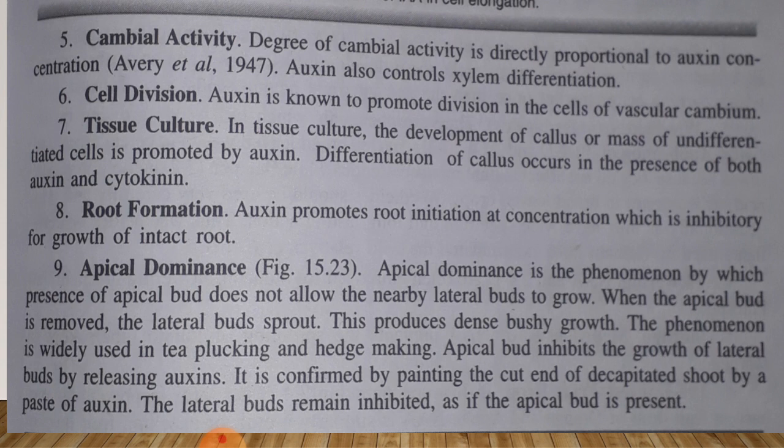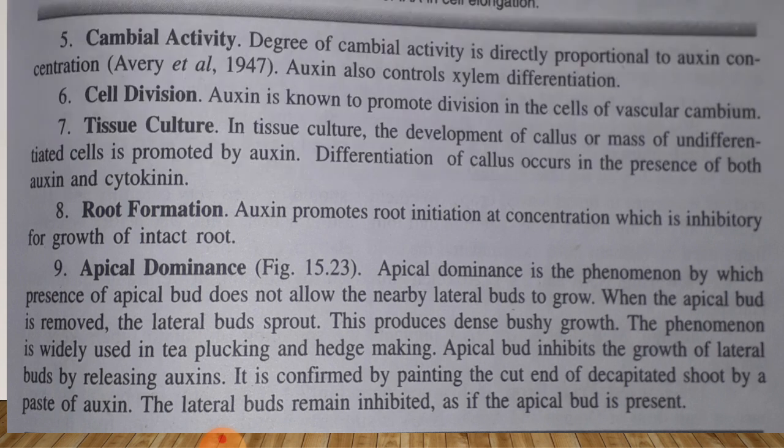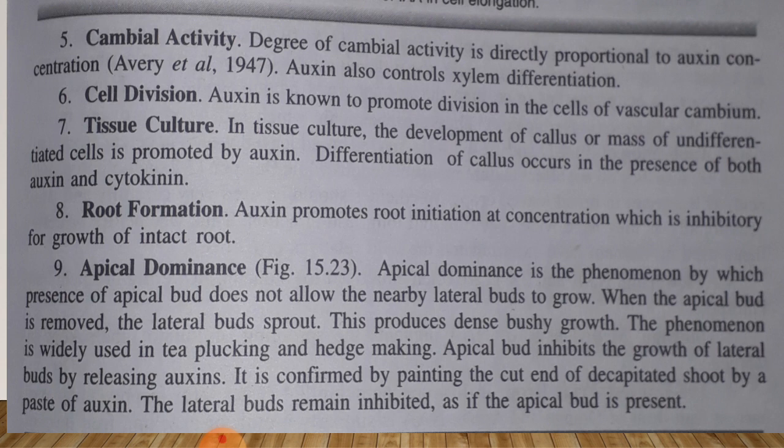Another function is cell division. Auxin is known to promote cell division in the cells of the vascular cambium. This type of vascular cambium is shown to promote cell division. In tissue culture, the development of callus or mass in different cells is promoted by auxin. Differentiation of callus occurs in the presence of both auxin and cytokinins.